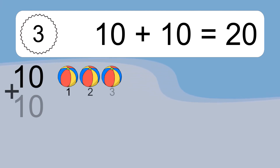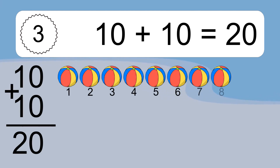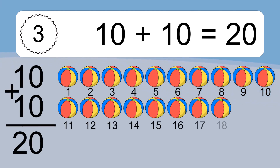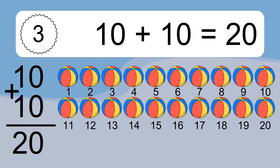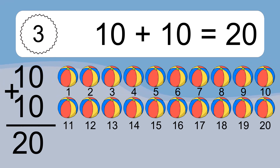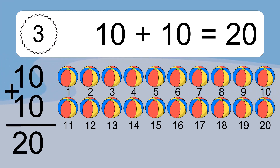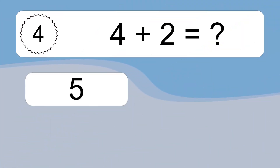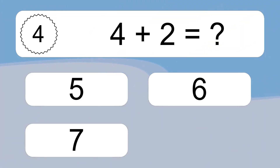10 plus 10 equals what? 10 plus 10 equals 20. Let's count it. 1, 2, 3, 4, 5, 6, 7, 8, 9, 10, 11, 12, 13, 14, 15, 16, 17, 18, 19, 20.